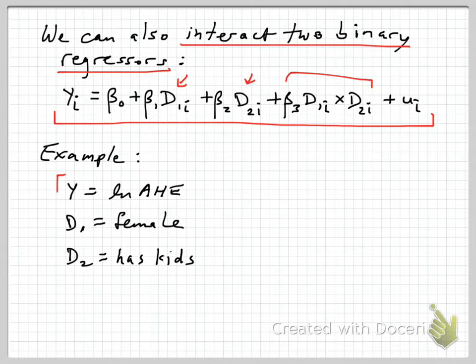Here's an example. Suppose we make our Y variable the log of average hourly earnings, and then we have two binary variables. D1 is a binary for female again, and let's say D2 is a binary variable if the person has kids. So D2 is equal to 1 if the person has children, and 0 otherwise.